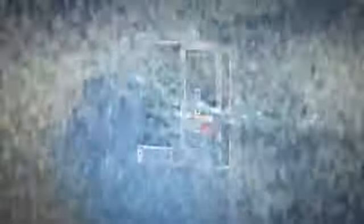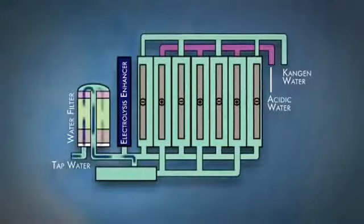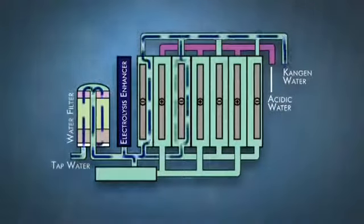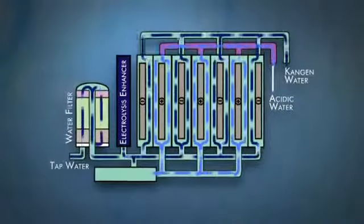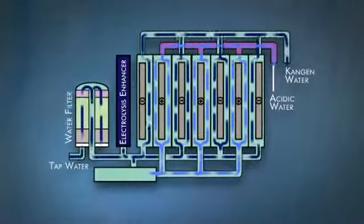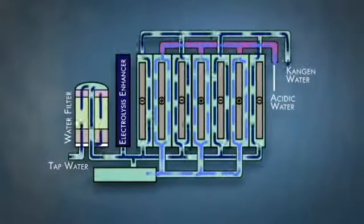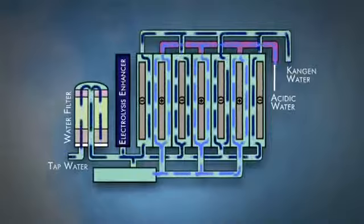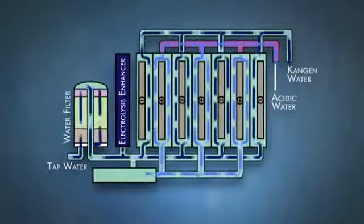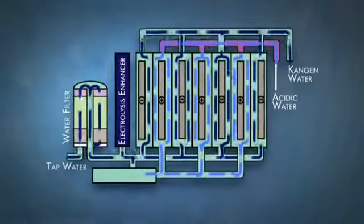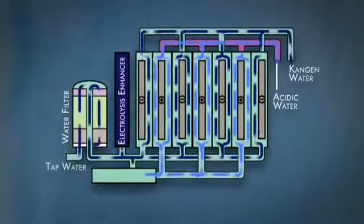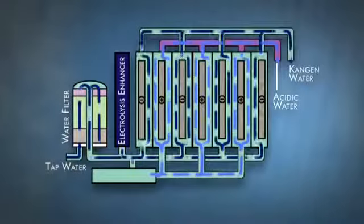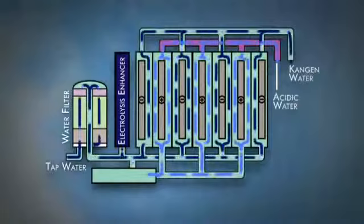Enagic's SD501 water ionizer has the ability to utilize the highest wattage in the industry. Everyone knows that if you want a brighter light, you use a higher wattage light bulb. With ionizers, the higher the wattage, the more it impacts the water. Enagic also uses a transformer for their power supply. A transformer is the most stable, effective, and time-tested form of electrical regulator available on the market today. Enagic machines don't overheat because of their precision engineering and technology. Most other machines don't use transformers because they cannot handle the heat generated.